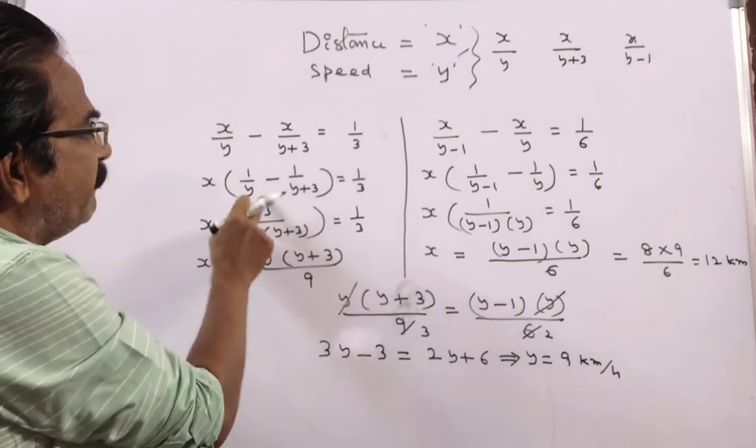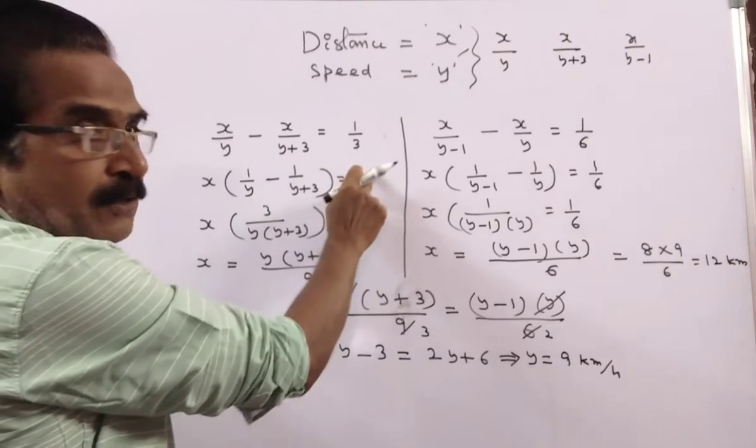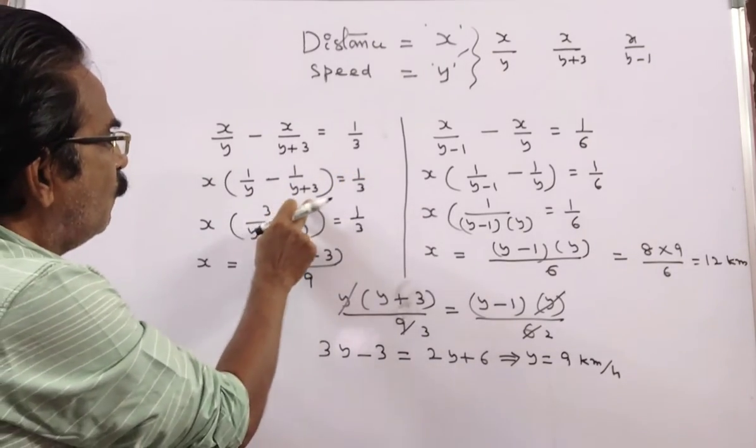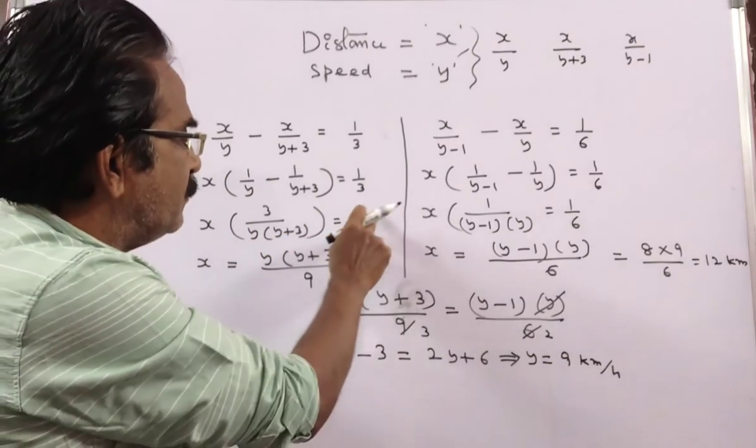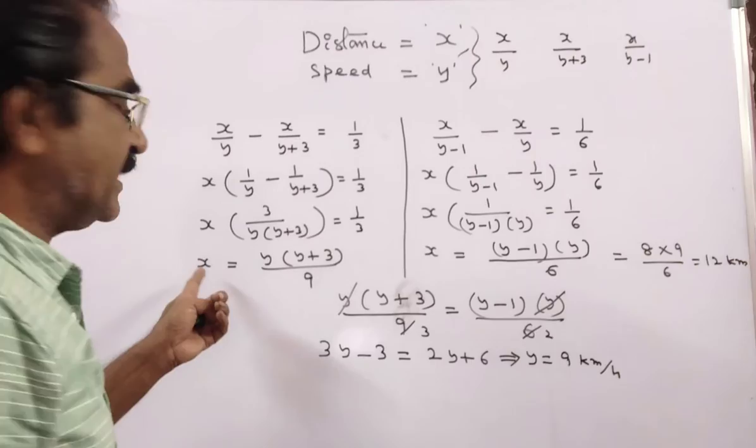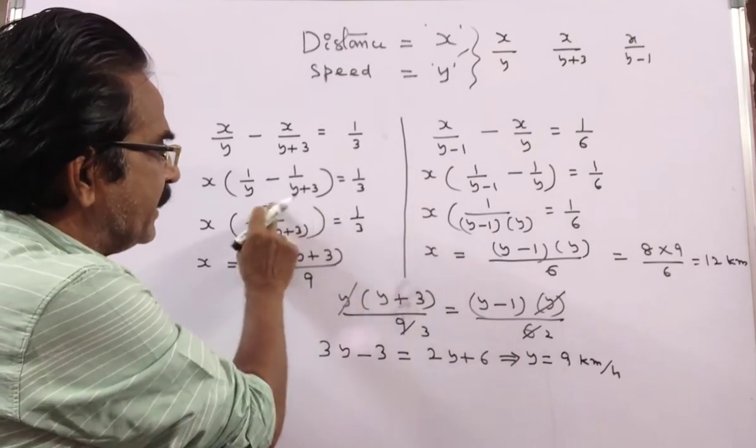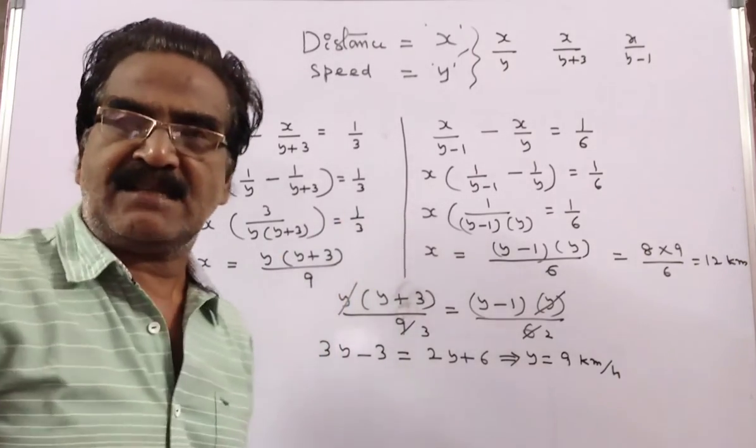x into (1 by y minus 1 by (y plus 3)) equals 1 by 3. x into ((y plus 3 minus y) by (y into (y plus 3))) equals 1 by 3. x into (3 by (y(y plus 3))) equals 1 by 3. This implies x equals y(y plus 3) by 9.